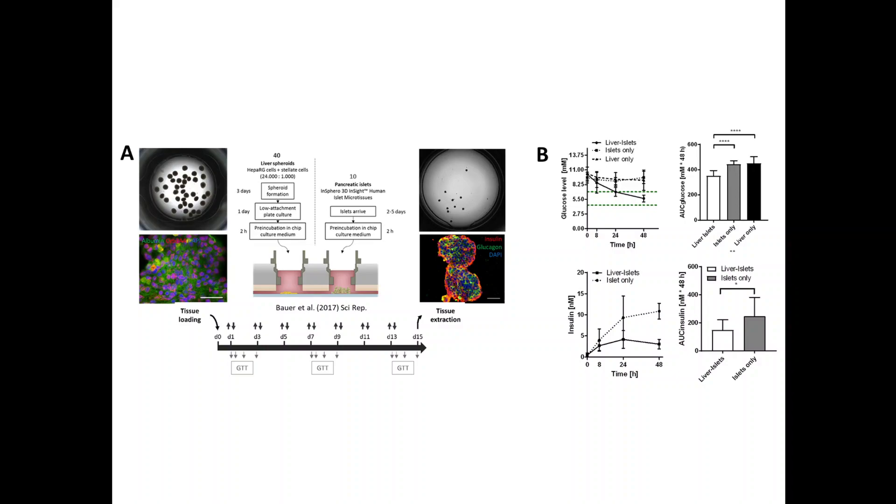Just to give you an example of how important it is to combine different organ models with each other, here's an example where we combined liver spheroids with pancreatic islets. And we cultured these for 15 days. And if we look at the glucose consumption, we can see that in single culture, either liver or islet, we have a very little glucose consumption, while if these two tissues are in co-culture, we actually see that after 24 hours, we actually reach an area which is physiological. And if we culture this for longer, we can see that it actually stays in this area. And this is important to see that there's actually a significant difference for single culture compared to co-culture.